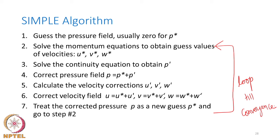The SIMPLE algorithm iterates four steps — guess pressure, get first-guess velocities, correct pressure, correct velocity — until all four quantities (u, v, w, pressure) are converged. It has been successfully applied to calculate flow fields in various geometries, including the fusion zone in weldments, giving accurate results.